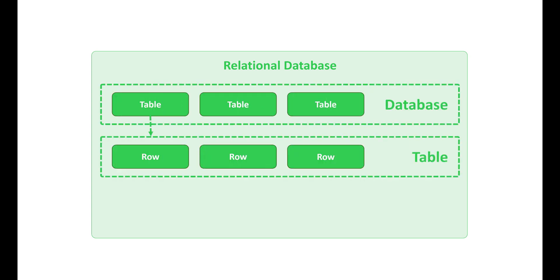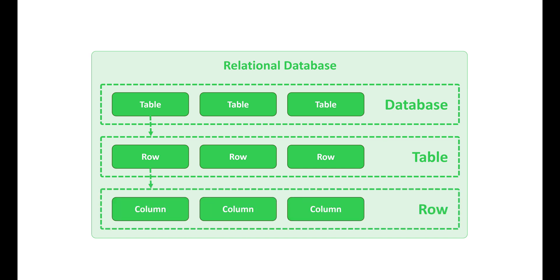A database table contains one or more rows — it's a collection of rows. A table row contains one or more columns.